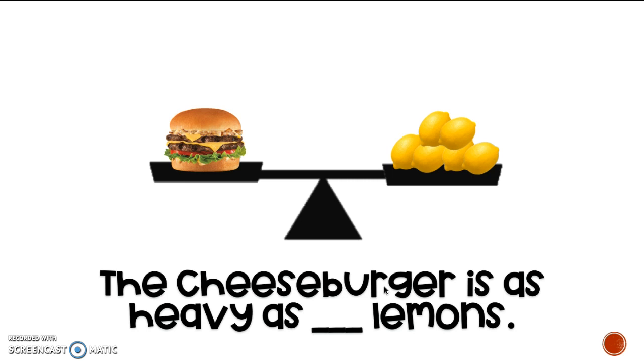Yeah, we're going to need to count them. Go ahead. Okay, did you come up with a lemon? All right, how many lemons are there? Perfect. Six. One, two, three, four, five, six. So our whole sentence is, the cheeseburger is as heavy as six lemons. Excellent job, friends.